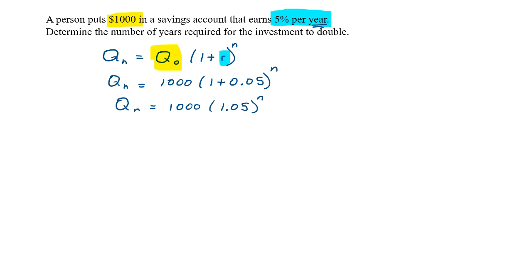So the question here is, determine the number of years required for the investment to double. Now, you may be tempted to put something in here and solve algebraically. We're not gonna solve this algebraically. We're gonna use a graph to solve it. And maybe I'll come back and talk about the algebra part in a minute and where we kinda get stuck.